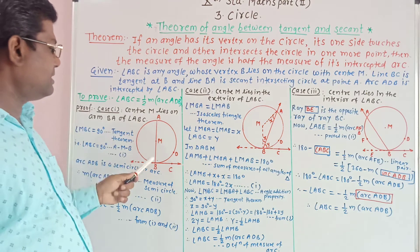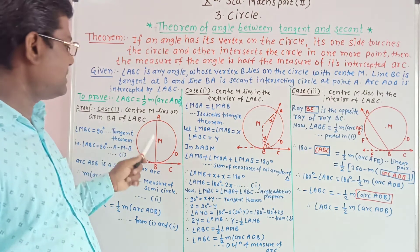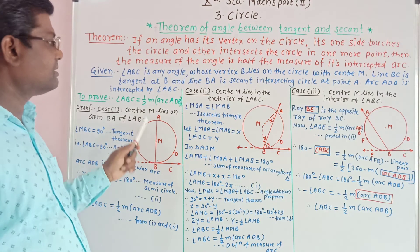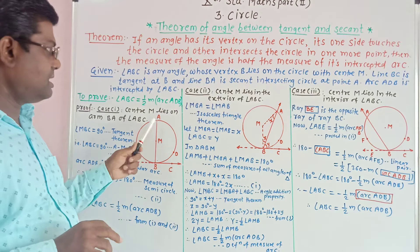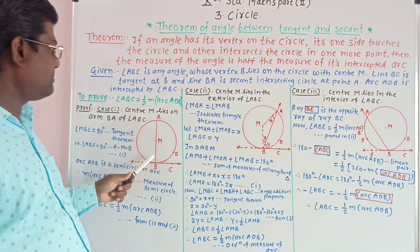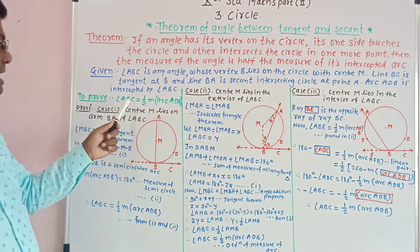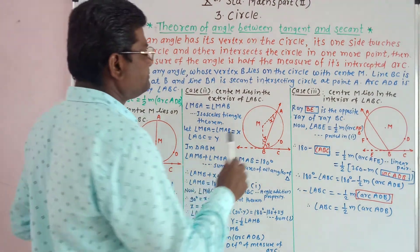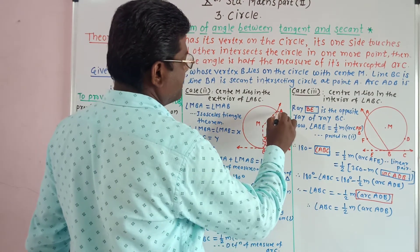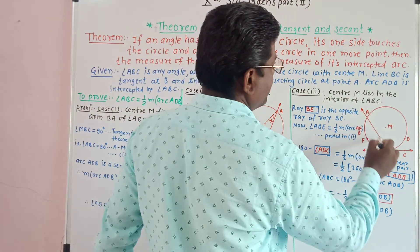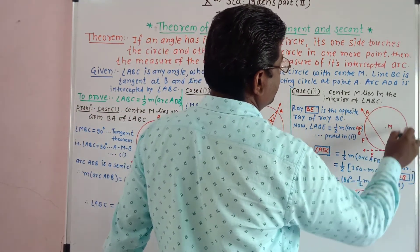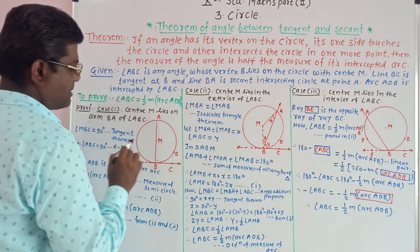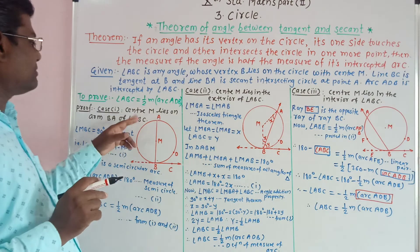Here, angle ABC is any angle whose vertex B lies on the circle with center M. Line BC is a tangent at point B and line BA is a secant intersecting the circle at point A. Arc ADB is intercepted by angle ABC. We have to prove that angle ABC is equal to 1/2 × major of arc ADB.